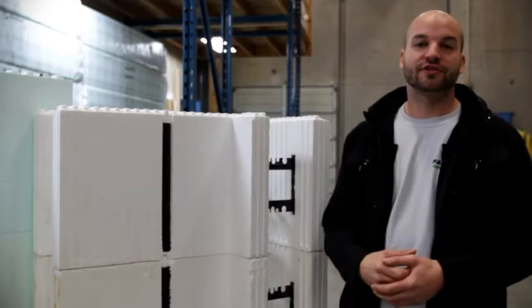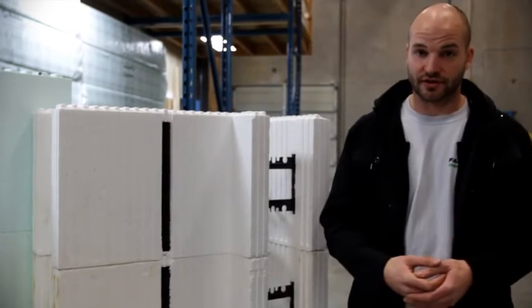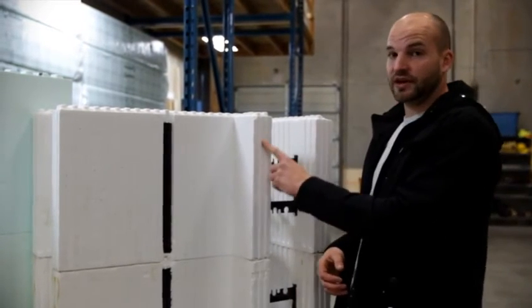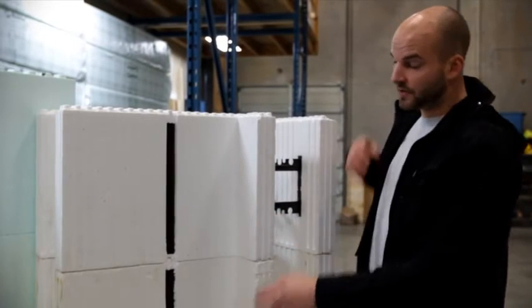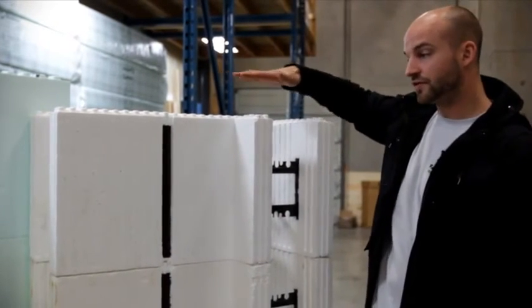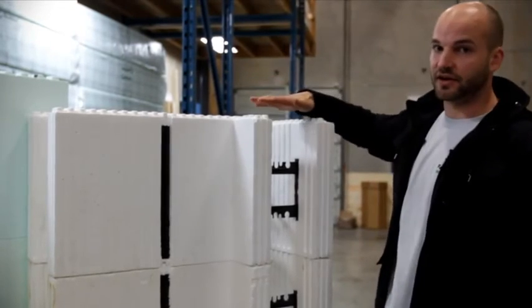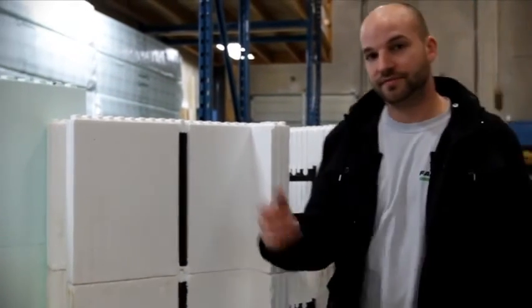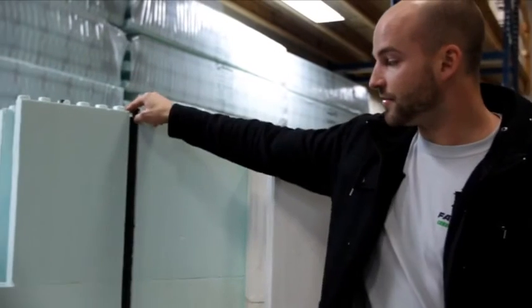When concrete cures it generates a lot of thermal energy. Now this heat is actually going to temporarily weaken our styrofoam which means because of the gaps between our webs and the weight of rebar and concrete in the walls we could actually get our walls settling on us. With New Dura the plastic webs run from the top to the bottom of the block so any chance of form settlement is completely eliminated.